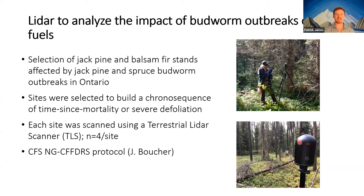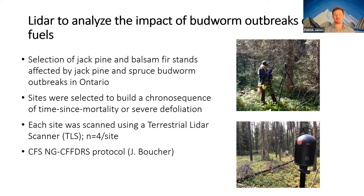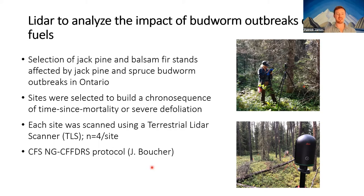This summer and last we visited a selection of jack pine and balsam fir stands in Ontario. Our objective was to select stands based on historical outbreak data to create a chrono-sequence of stands with different times since the initiation of defoliation — assembling different sites from different areas affected at different times to build that time series efficiently. We scanned sites using a BLK 360 TLS unit, with four replicates per site and nine scans per site to overcome issues of occlusion from tree stems.